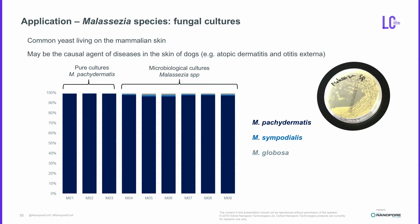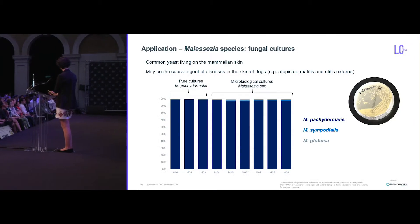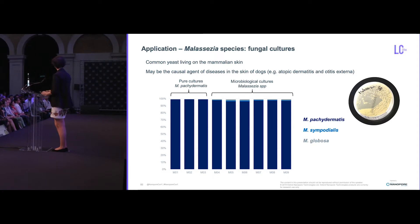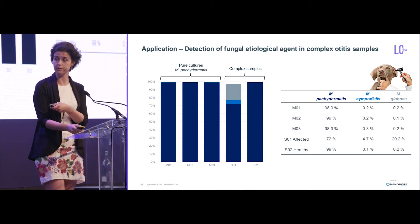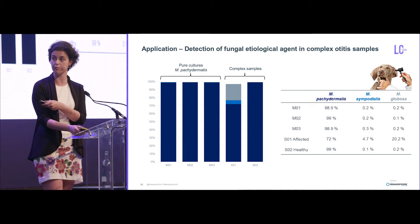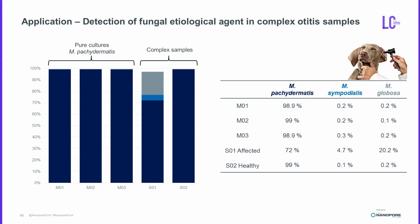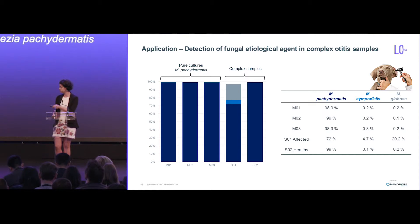Now I want to focus on Malassezia pachydermatis because it's one of the most common yeasts we can find on the skin. We had three pure culture samples we knew were pachydermatis and other cultures where we didn't know which species of Malassezia it was. Thanks to MinION we confirmed it was always pachydermatis in our cultures, and we used the pure cultures as positive controls to then sequence complex samples. From the same dog we collected two kinds of samples — one from an affected ear and one from a healthy ear — and we saw that when affected, the Malassezia species composition changes, compared to the healthy ear which is normally pachydermatis.